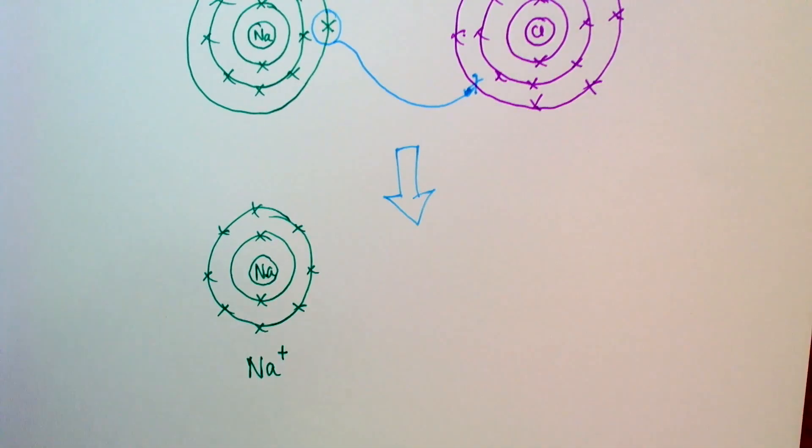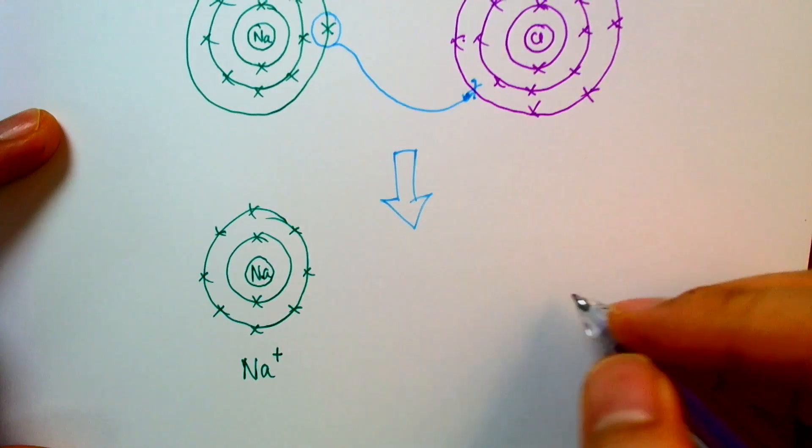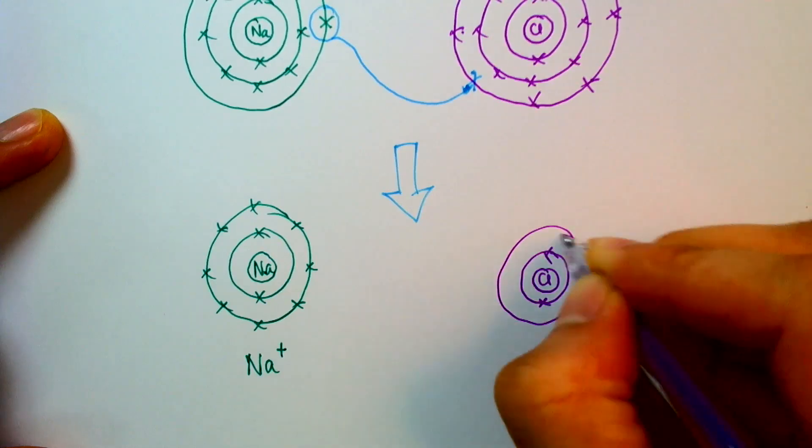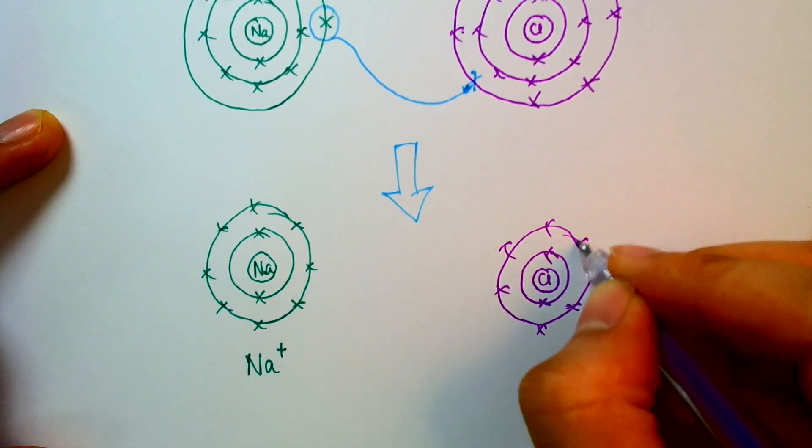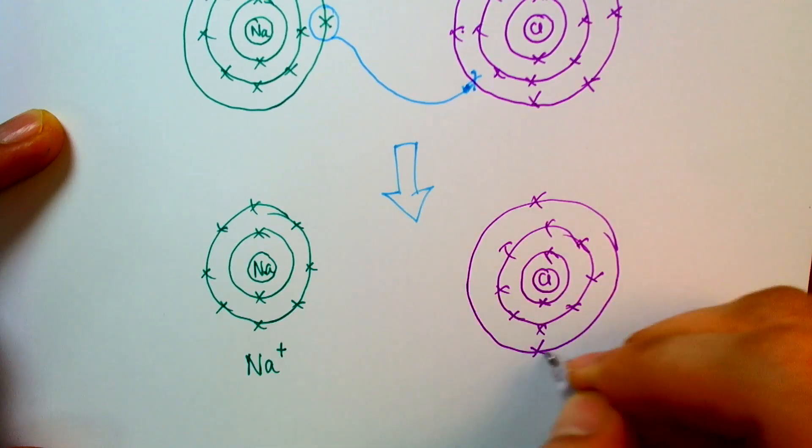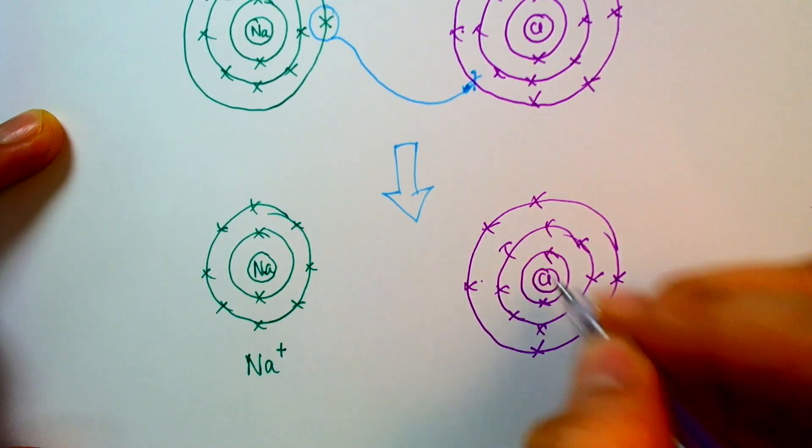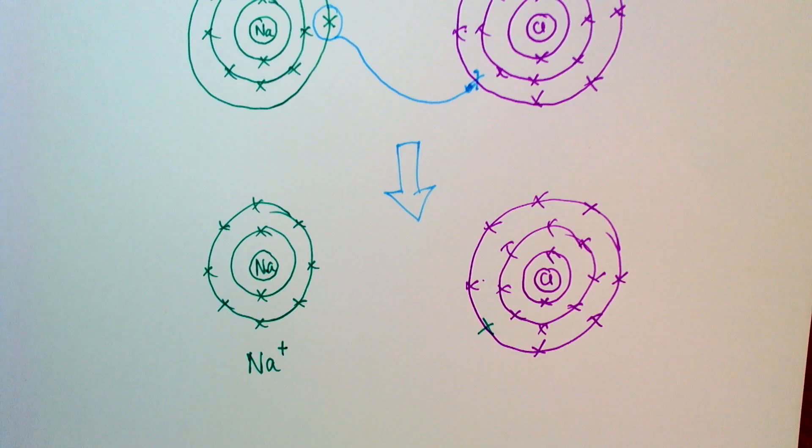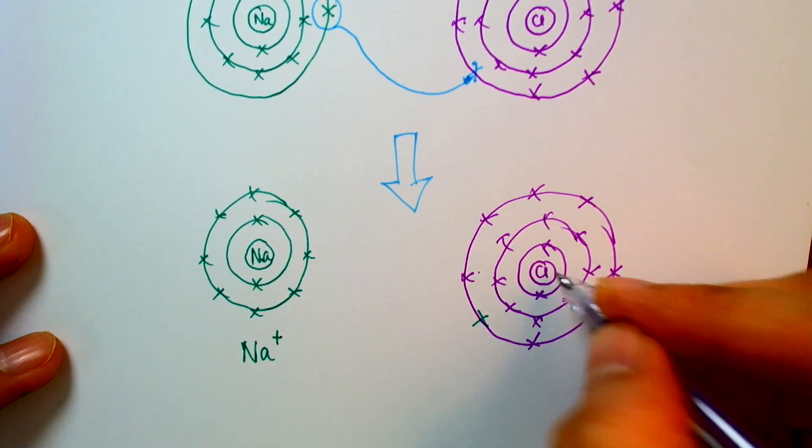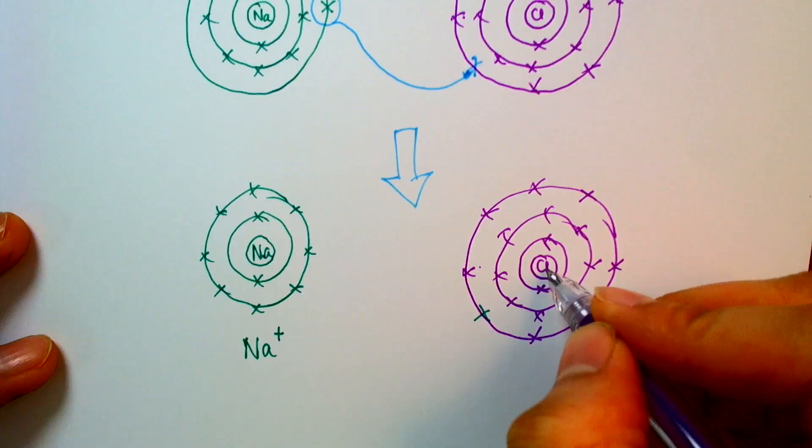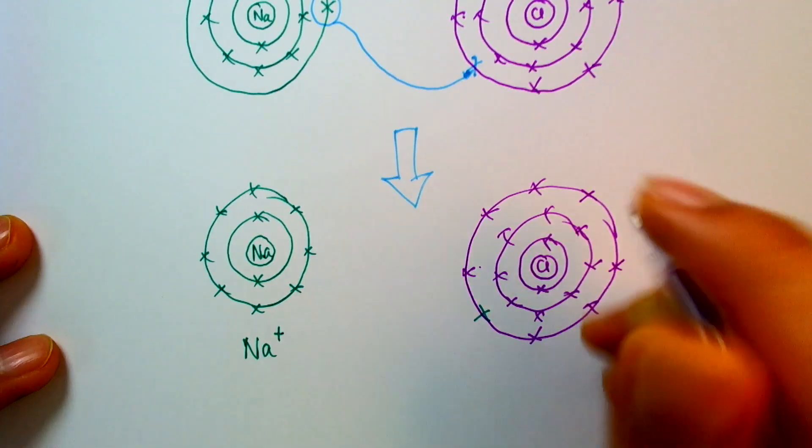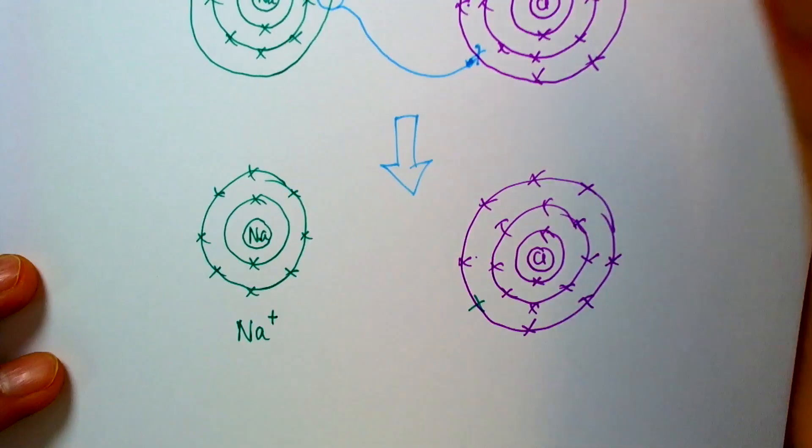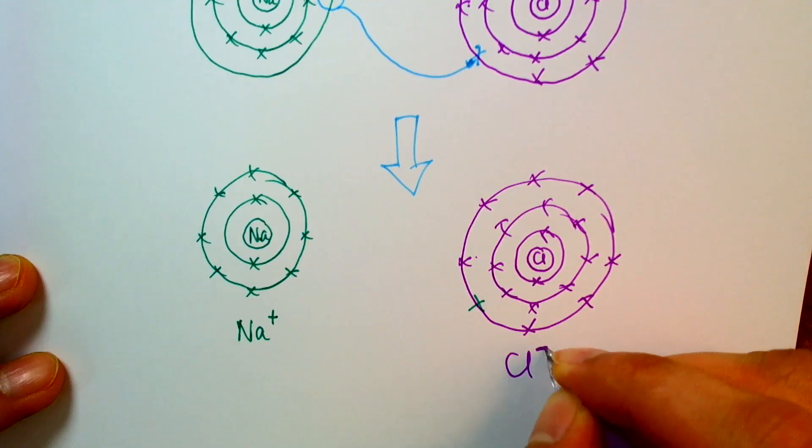And chlorine now has an extra electron in its outer shell. So chlorine now has 2, 8, and 8 because of the extra electron it gained from sodium. So now chlorine, remember, the protons didn't go anywhere. The protons are still in the nucleus of the chlorine, and it had 17 protons. It still has 17 protons, but now it has 18 electrons because 2, 8, and 8 is going to give me 18 electrons. So chlorine has a net negative charge.